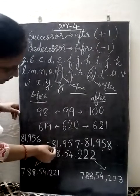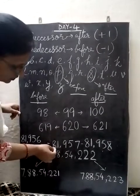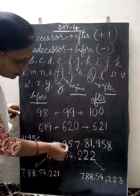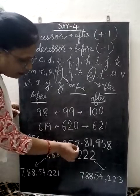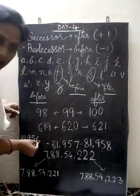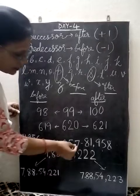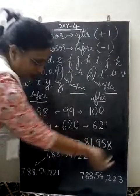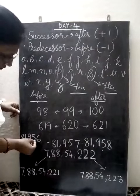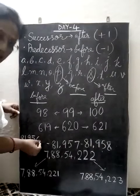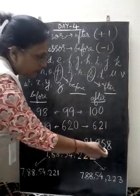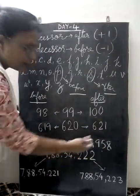Here I have taken a five-digit number: 81,957. So 7 minus 1 is 6, giving predecessor 81,956. And 7 plus 1 is 8, giving successor 81,958.